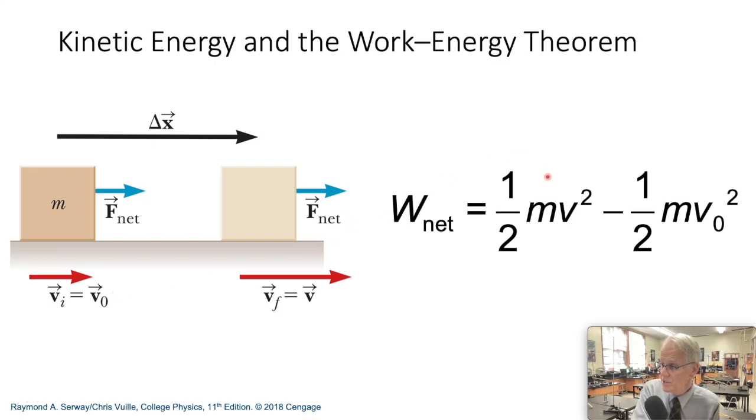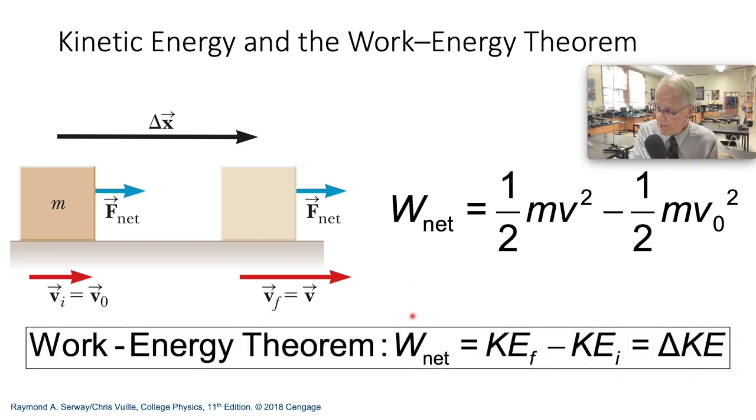So by subtracting these two, we get the change in kinetic energy. So the work we do on this object changes the kinetic energy. So it's the final kinetic energy minus the initial. Here we'll define the work-energy theorem as the net work that gets done on an object is the change in its kinetic energy.